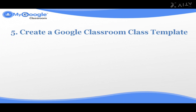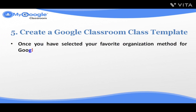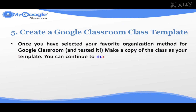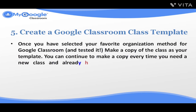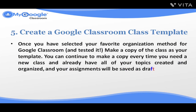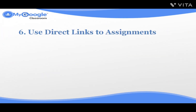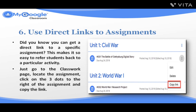Number five: Create a Google Classroom Class Template. Once you have selected your favorite organization method for Google Classroom and tested it, make a copy of the class as your template. You can continue to make a copy every time you need a new class, and already have all your topics created and organized, and your assignments will be saved as drafts. Number six: Use Direct Links to Assignments. Did you know you can get a direct link to a specific assignment? This makes it easy to refer students back to a particular activity — just go to the Classroom page, locate the assignment, click on the three dots to the right of the assignment, and copy the link.